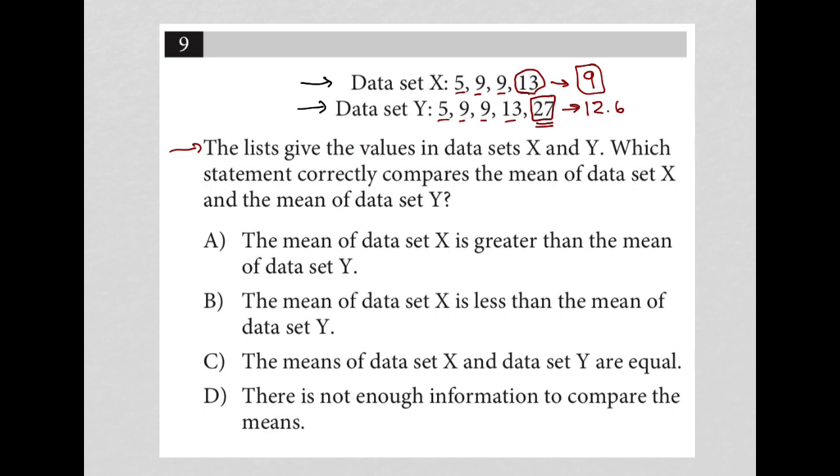Choice A: the mean of data set X is greater than - nope. Choice B: the mean of data set X is less than the mean of data set Y - yes, that's true. Choice C: the means are equal - definitely not. And D: there's not enough information - definitely not. So choice B is the correct answer.